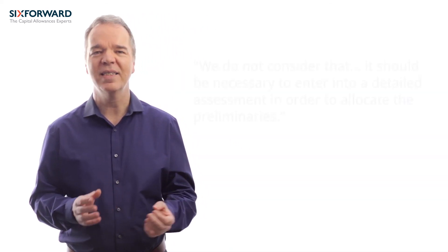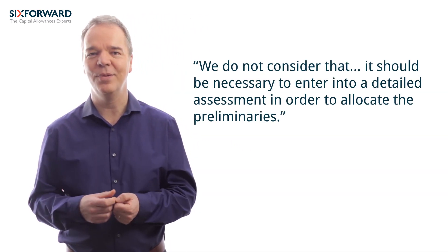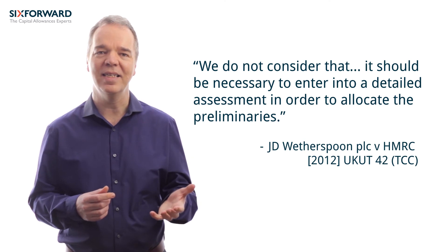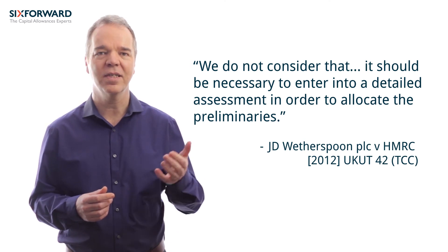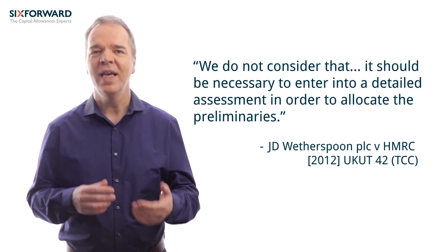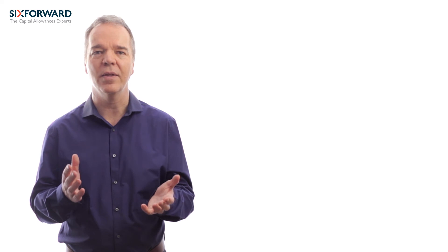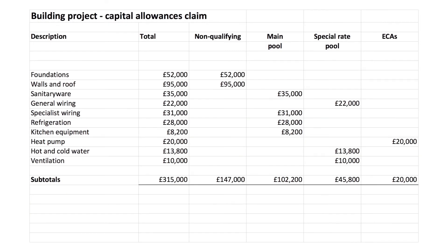Most projects will include preliminary and overhead costs as well as a variety of professional fees. The rule here is that a proportionate amount of time should be spent to allocate these costs to the correct headings. In some cases it will be clear that the costs do not qualify at all — for example, legal costs incurred on purchasing the land on which the property has been built.